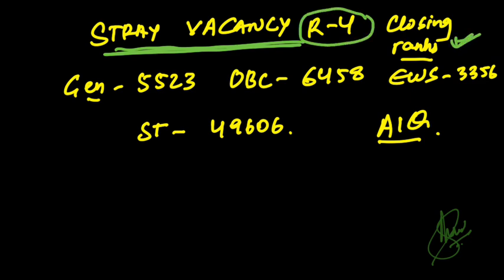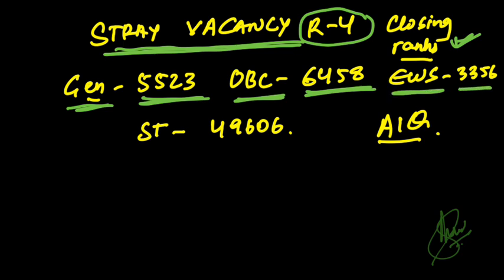For the last stray vacancy round — round 4 — the closing ranks are: General category — 5523, OBC — 6458, EWS — 33356, and ST category — 49606. These are the closing ranks for MD Radio Diagnosis All India Quota seats.